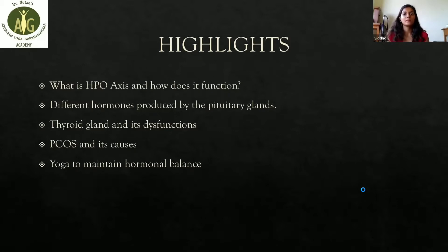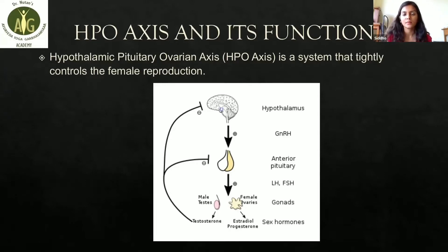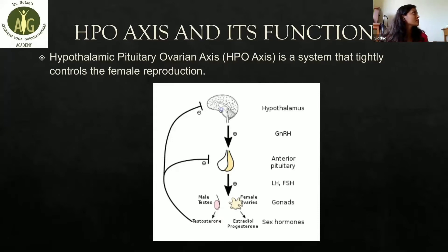The HPO axis — the hypothalamus-pituitary-ovarian axis — secretes hormones involved with female reproduction. There are three main components. The first is the hypothalamus, located at the base of the brain just above the brain stem. Along with maintaining other things, the hypothalamus secretes certain hormones including GnRH, the gonadotropin-releasing hormone, which is released from the hypothalamus at the onset of puberty in young women.